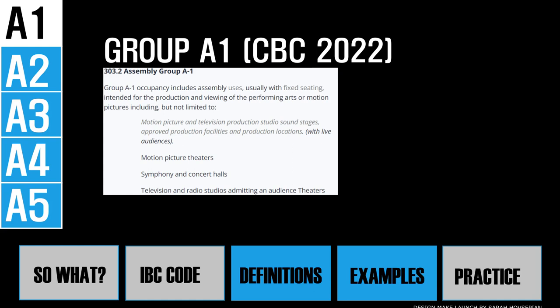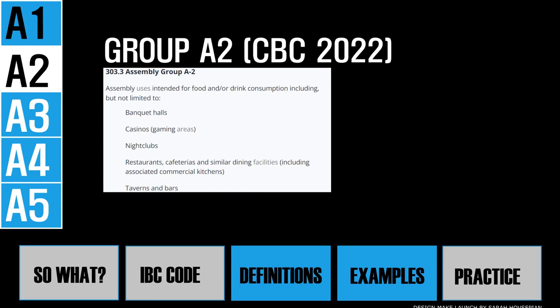Group A2 is assembly areas where food and drink are consumed. The code assumes that alcoholic beverages may be served in A2, potentially impairing occupants' response to an emergency. It also assumes that chairs and tables may be loose and could obstruct egress paths to exit the building. To remember A2, picture two people swimming in a giant pool of wine at their favorite restaurant — a vivid, memorable scene.